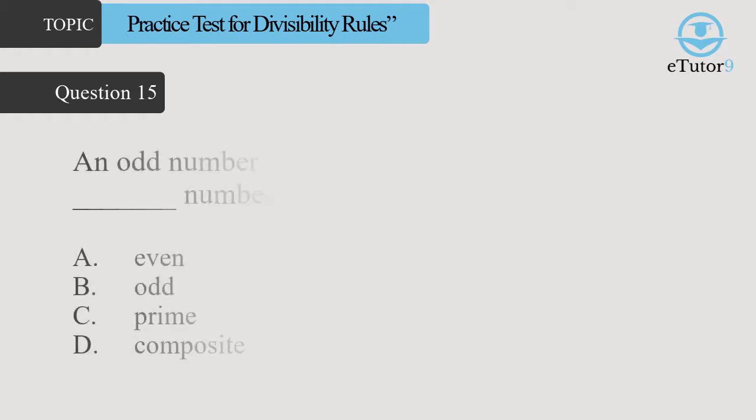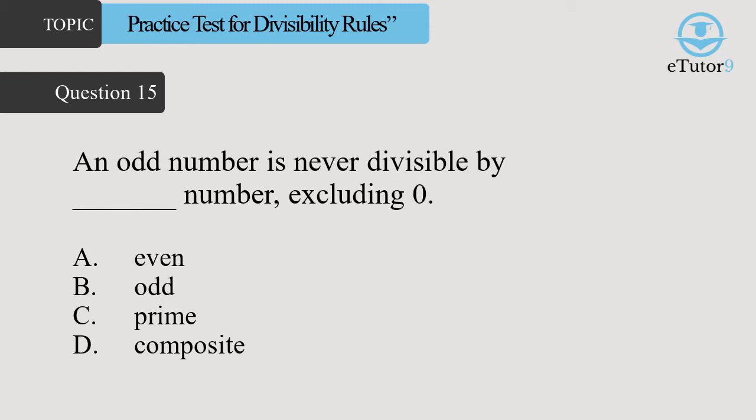Question 15: An odd number is never divisible by dash number, excluding 0. Answer is D.